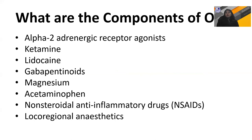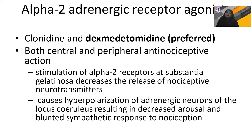What are the components of OFA — what do we have in our armamentarium? First and foremost, alpha-2 adrenergic receptor agonists. Then we have NMDA antagonist ketamine, lidocaine, GABA pentinoids, magnesium, acetaminophen and NSAIDs, and of course local and regional anesthetics. I am going to touch on each of these drugs that we have in our sleeves to deal with OFA.